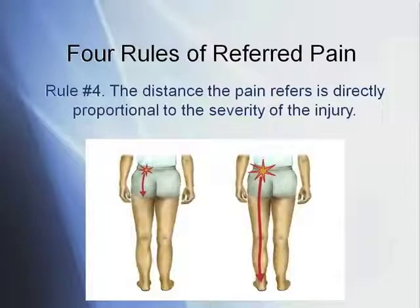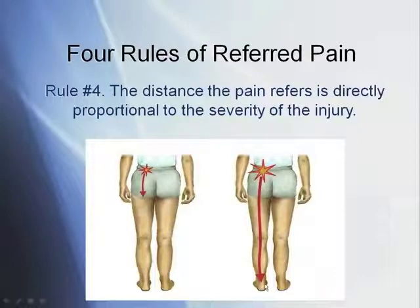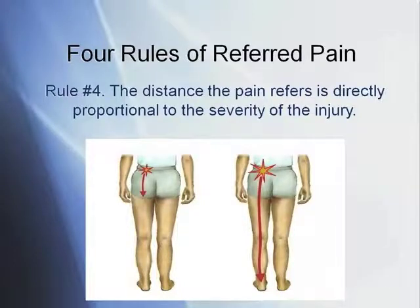Rule four: the distance the pain refers is directly proportional to the severity of the injury. A minor injury may only refer a little — perhaps to the middle or base of the buttock. But a really severe injury might refer all the way down to the foot. So the distance the pain travels corresponds directly to how serious the injury is.